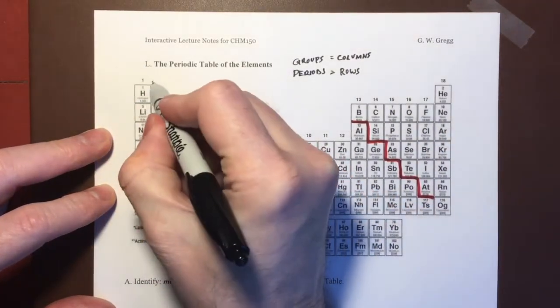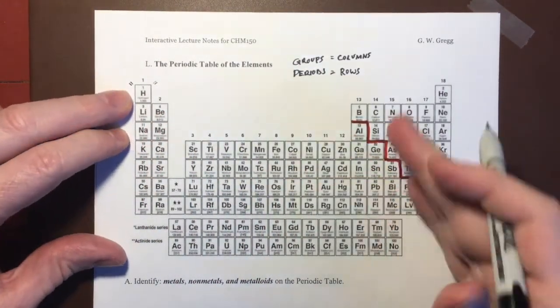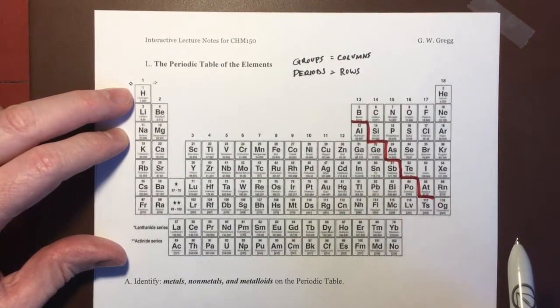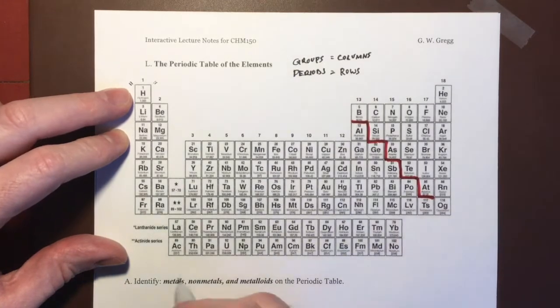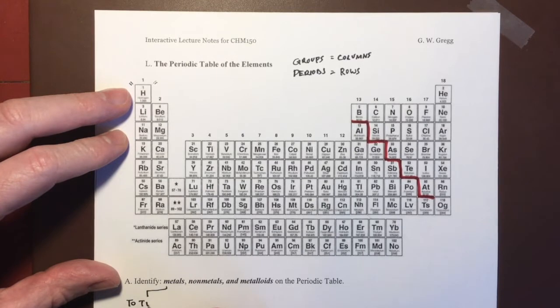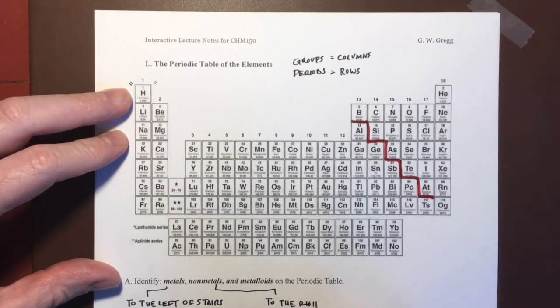The one notable exception to that is hydrogen, which obviously is to the left of that stair step but it's also obviously not a metal. So metals, we say that they are to the left of the stairs. Non-metals generally are to the right of the stairs.